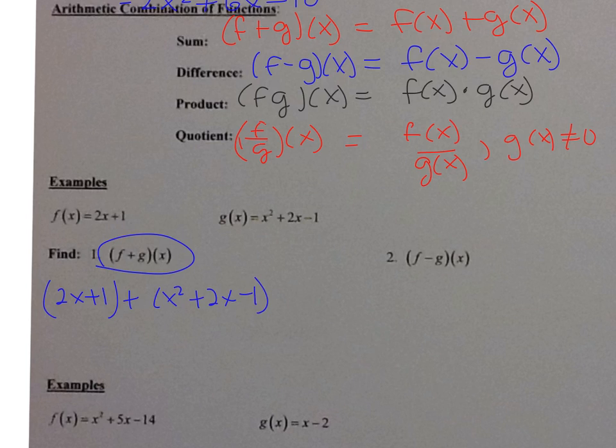Now since we're adding, we just have to combine like terms. So I have x squared. 2x plus 2x is 4x. And then I have 1 minus 1. Well, that's 0. So my answer is x squared plus 4x.